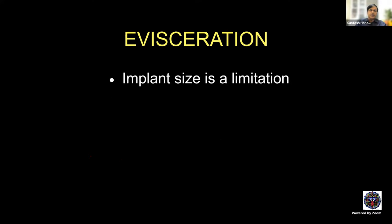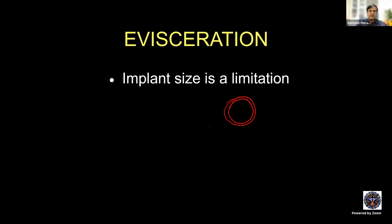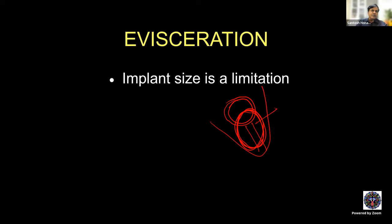In evisceration, implant size is considered a limitation. However, in a fully formed or staphylomatous eye, implant size is not so much of a limitation because the implant is placed anteriorly within the scleral cavity with the optic nerve right there. Whereas in enucleation, the implant is placed in the intraconal space and therefore a larger implant is needed. Implant size is only a limitation in atrophic or smaller eyes.